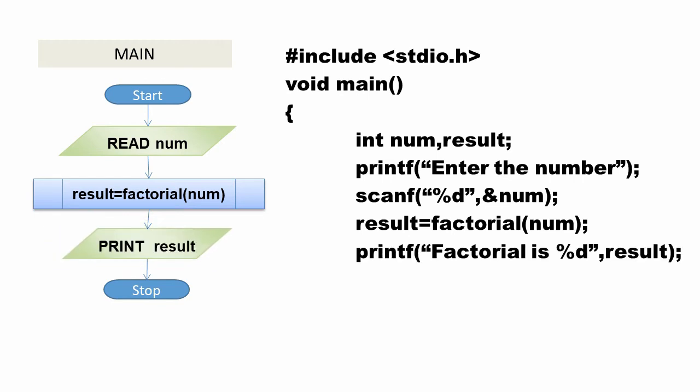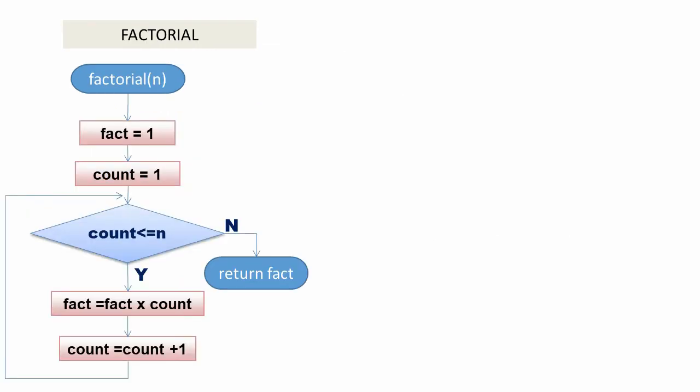Now let us write the code for function factorial. Start with function header. The function returns an integer value and receives one integer value as parameter, hence we can write: int factorial(int n). Start function body.